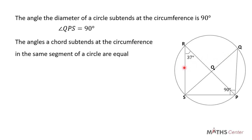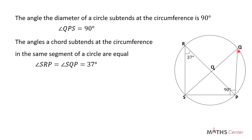What this means is that the angle SRP — the angle the chord SP sustains at point R — is equal to the angle SKP, which is the angle the chord SP sustains at point K. So the angle at point R is 37 degrees and the angle at point K is also 37 degrees.